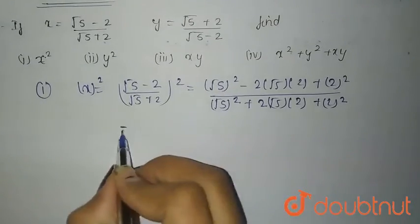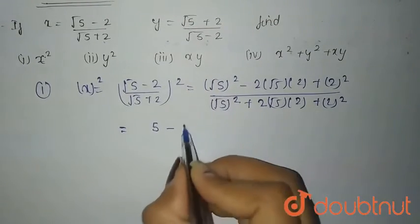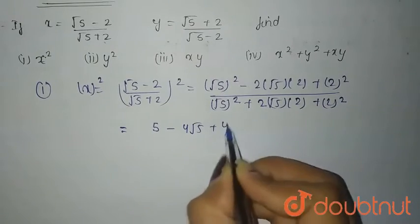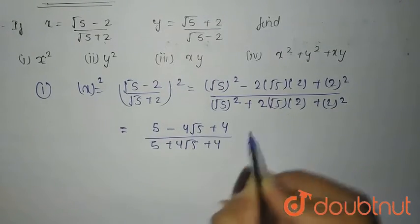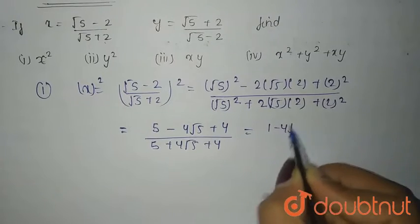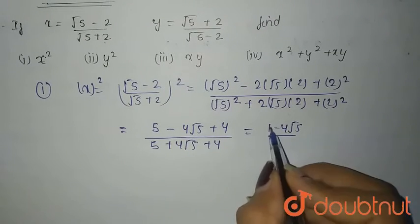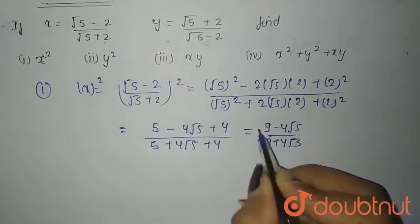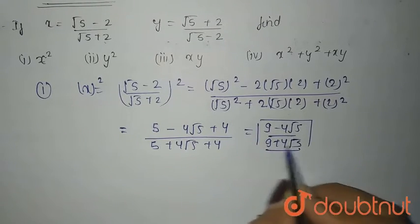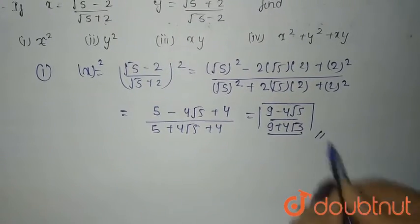Now, it comes out to be 5 minus 4√5 plus 4, upon 5 plus 4√5 plus 4. This simplifies to 9 minus 4√5, upon 9 plus 4√5. This is your x squared.